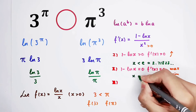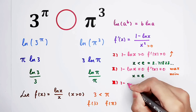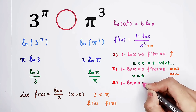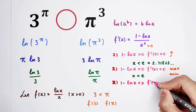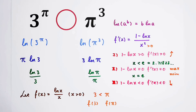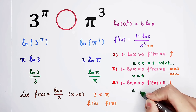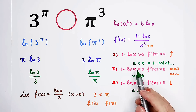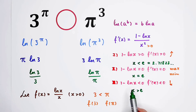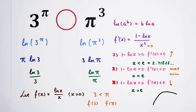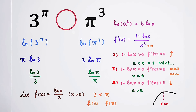So: if x is less than e, the function is increasing; at x equals e, the function has its maximum value; and for x greater than e, the function is decreasing. We can sketch its graph — here at x equals e, the derivative is zero and it is the global maximum of the function.